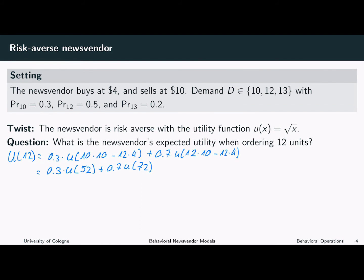This means our utility is given by 0.3 times the square root of 52 plus 0.7 times the square root of 72.